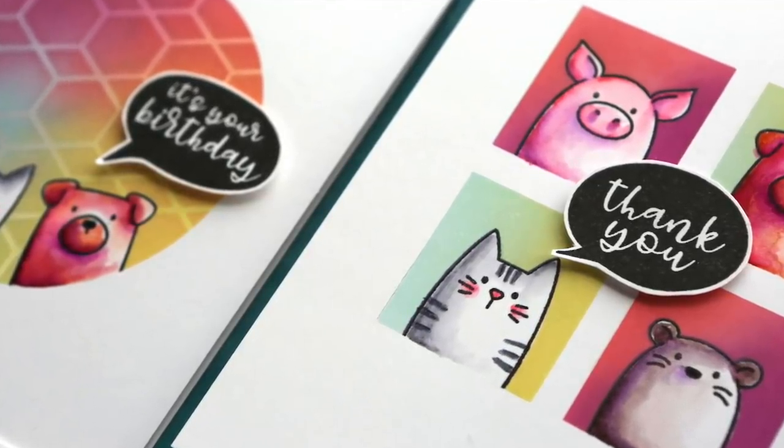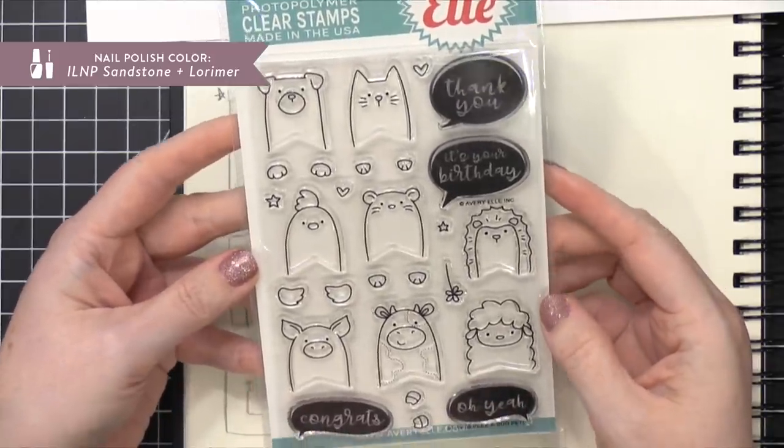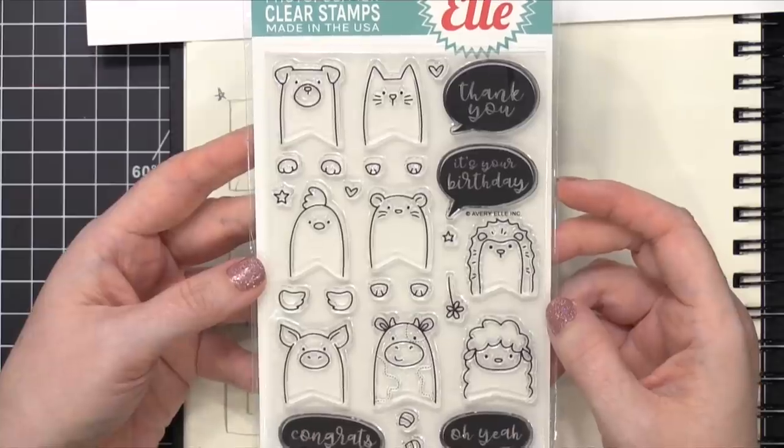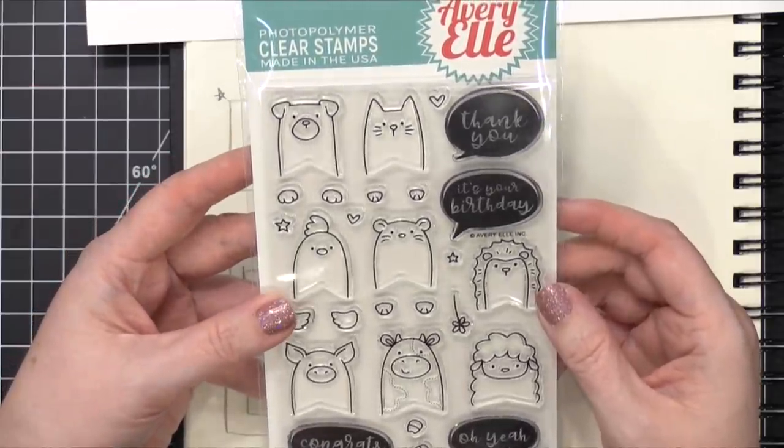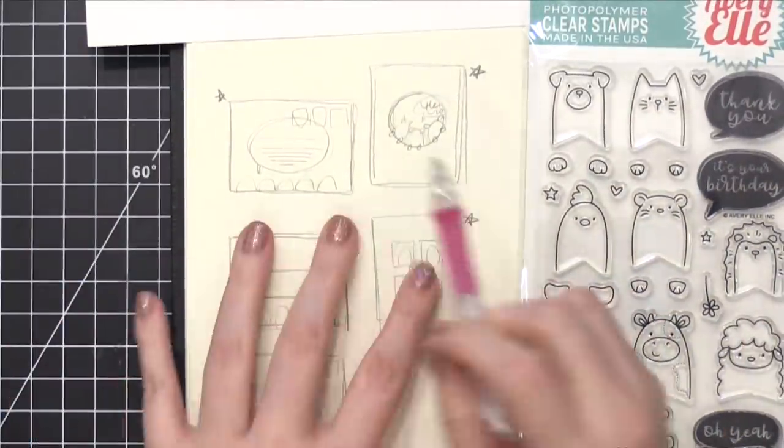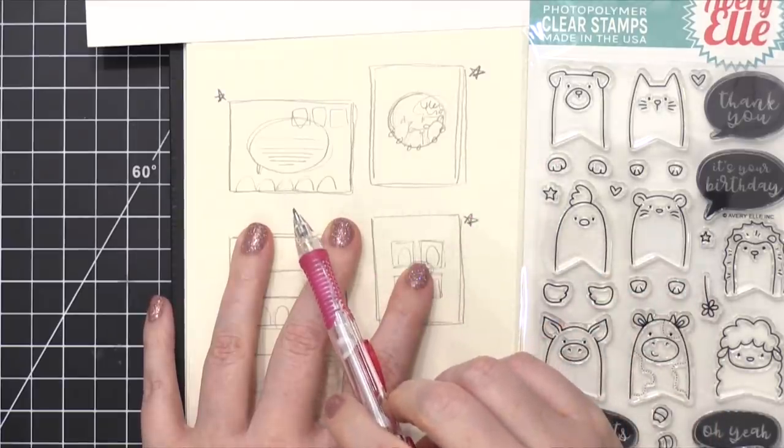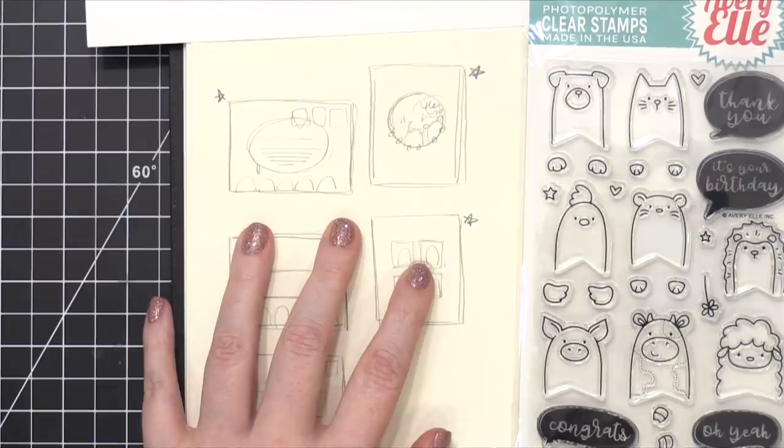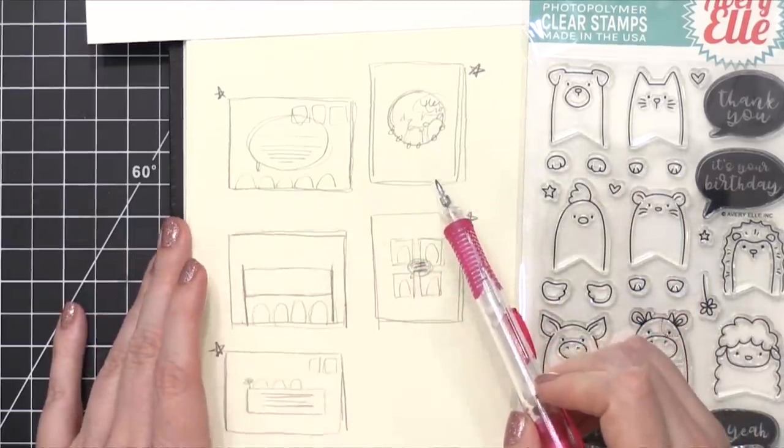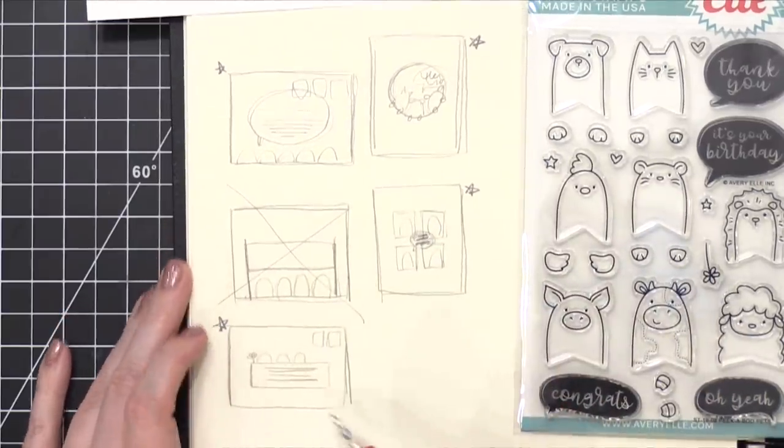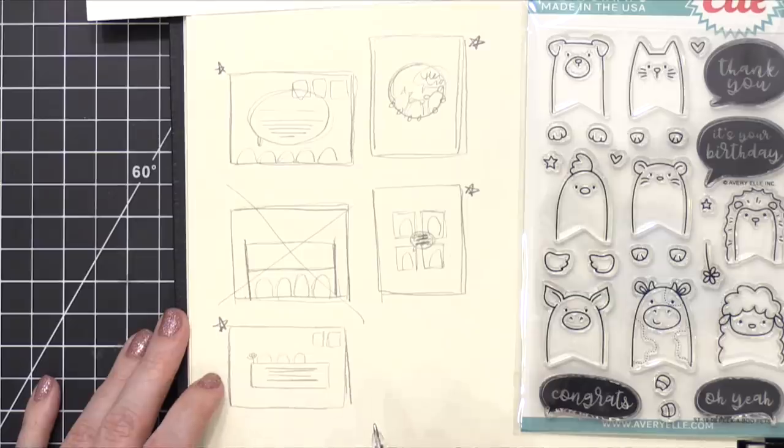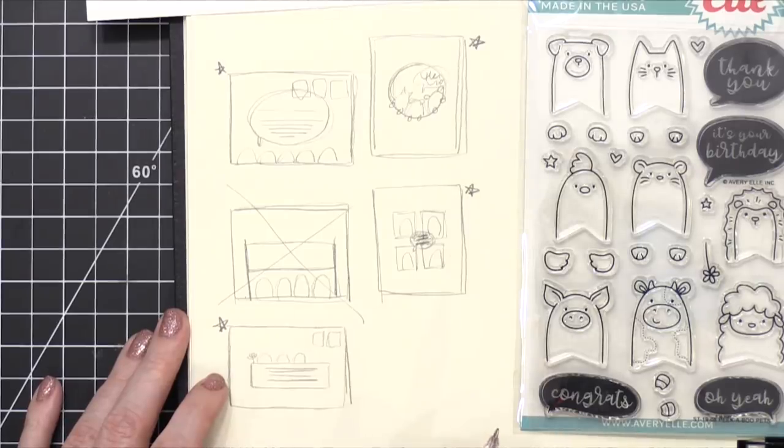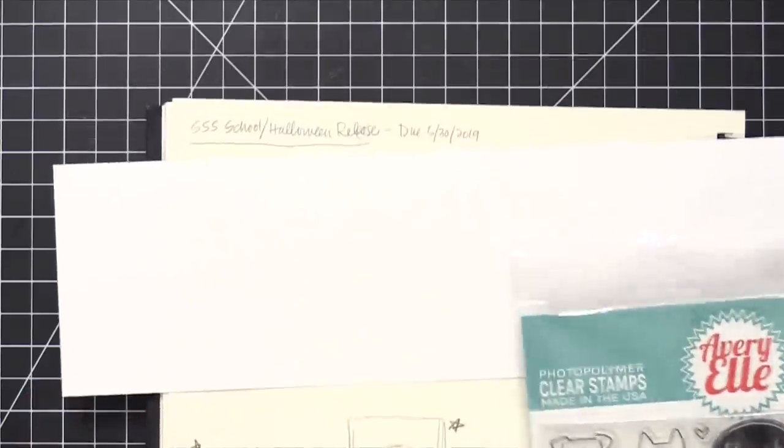The stamp set that I'm going to be using today is from Avery Elle. This is the Peekaboo Pets stamp set. It came out a few months ago, and it's absolutely adorable. So these are the sketches that I've come up with. I've got an envelope with a talk bubble with the animals underneath, a circular shape with the animals along the bottom, an envelope with a large banner area where animals are peeking out above, and then four squares with each of the animals in each square.